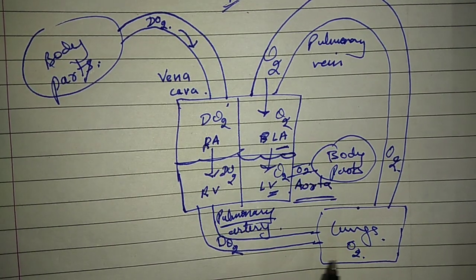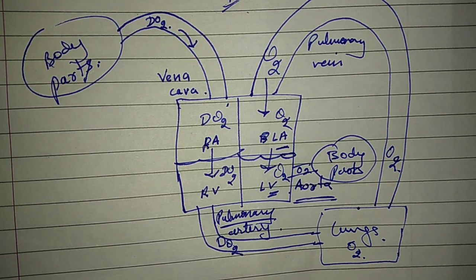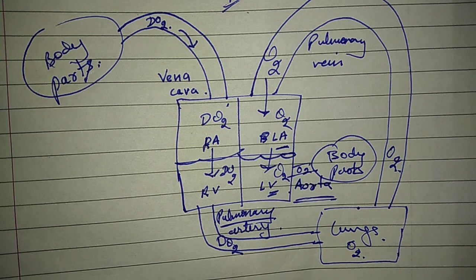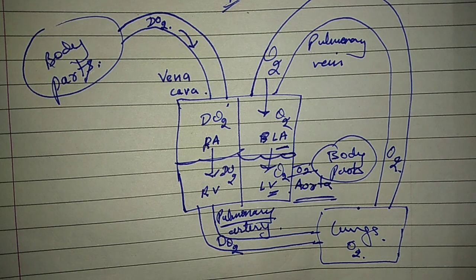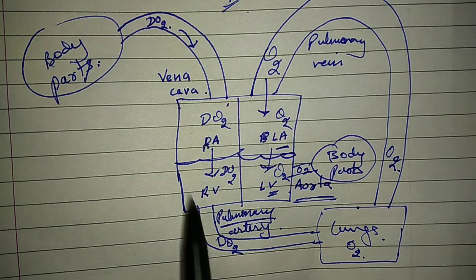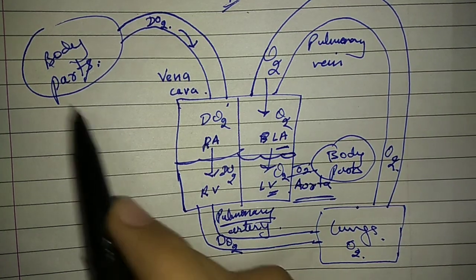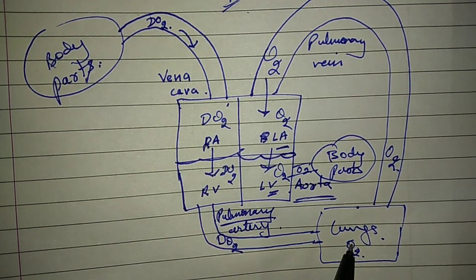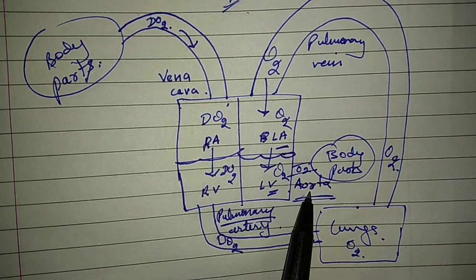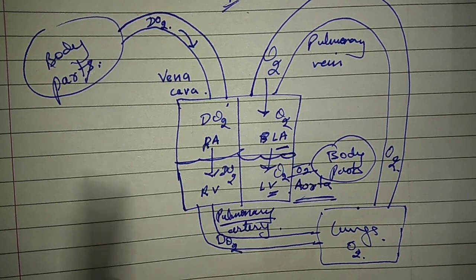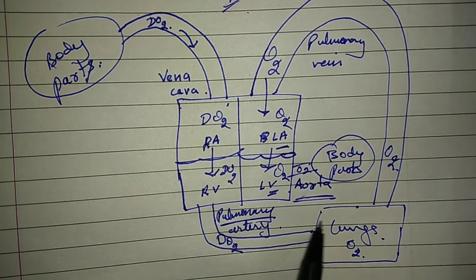The aorta supplies blood to all body parts. Now let us talk about double circulation. This is called double circulation because blood passes through the heart two times. First, blood comes from the body to the heart, then goes to the lungs. Then from the lungs, blood comes back to the heart, and the heart pumps it back to the body.